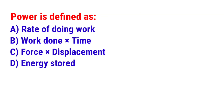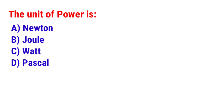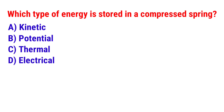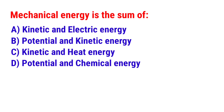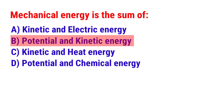Next question: Power is defined as? The answer is option A — Rate of doing work. Next question: The unit of power is? The answer is option C — Watt. Next question: Which type of energy is stored in a compressed spring? The answer is option B — Potential energy. Next question: Mechanical energy is the sum of? The answer is option B — Potential and kinetic energy.